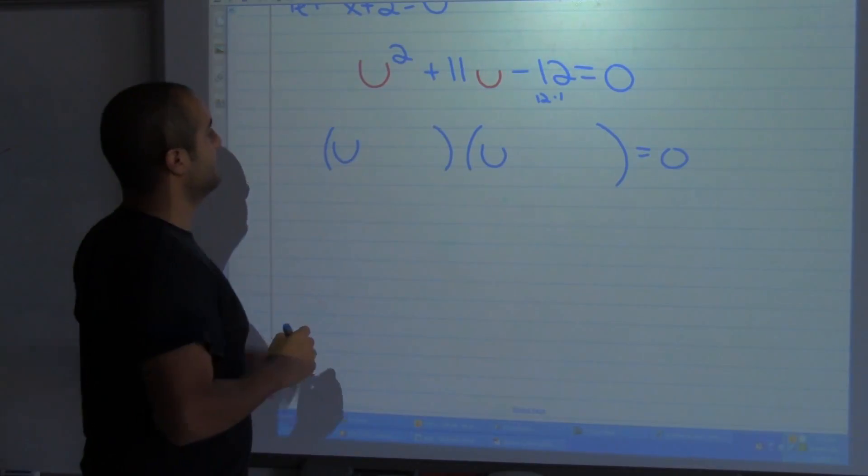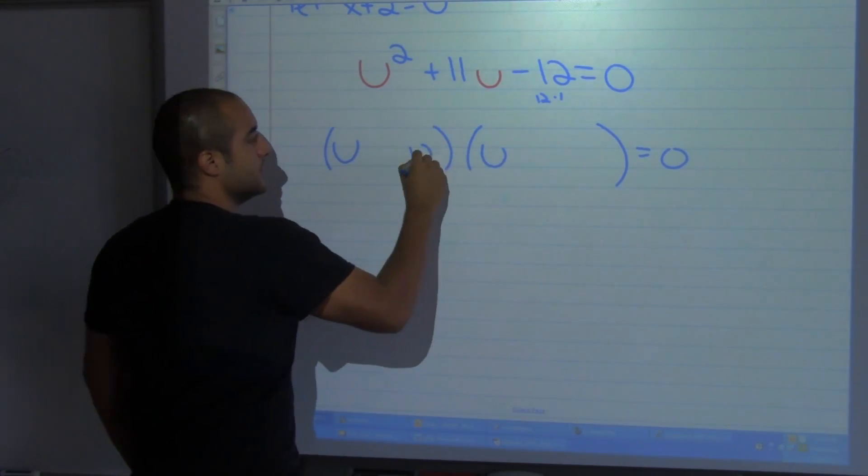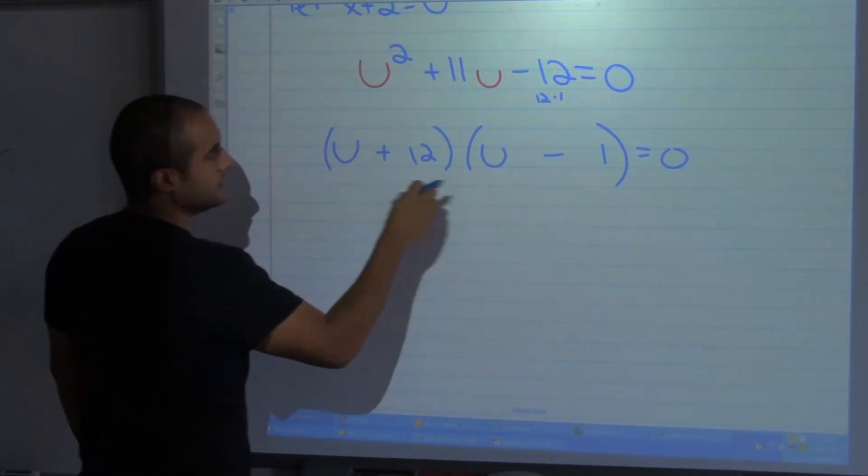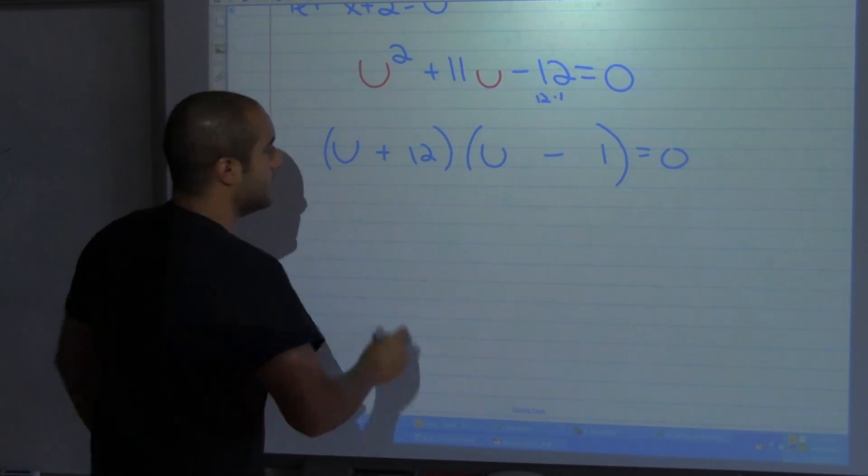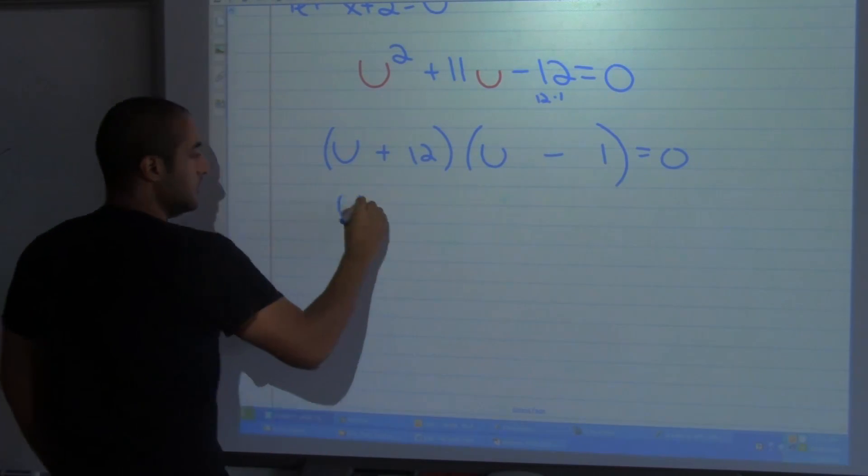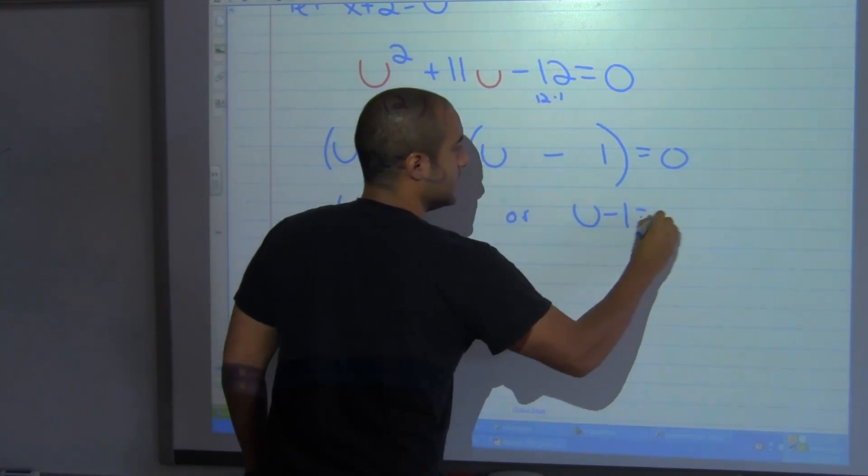So let's see. Remember using u's. Now remember either u plus 12 is equal to 0 or u minus 1 is equal to 0.